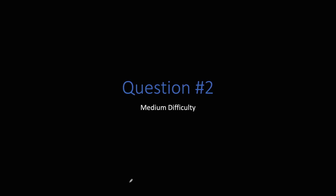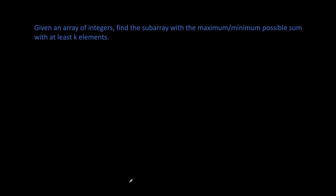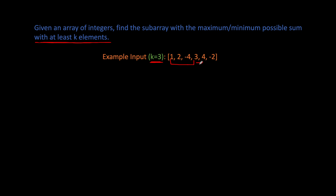Now let's move on to the second question — this is where things get a bit spicy. We can apply the sliding window on Kadane's algorithm. Given an array of integers, find a subarray with the maximum-minimum possible sum with at least k elements. This is the exact same question we solved before, with the additional rule that subarrays must have at least k elements. With our example input and k equals 3, we must find subarrays with at least three elements.